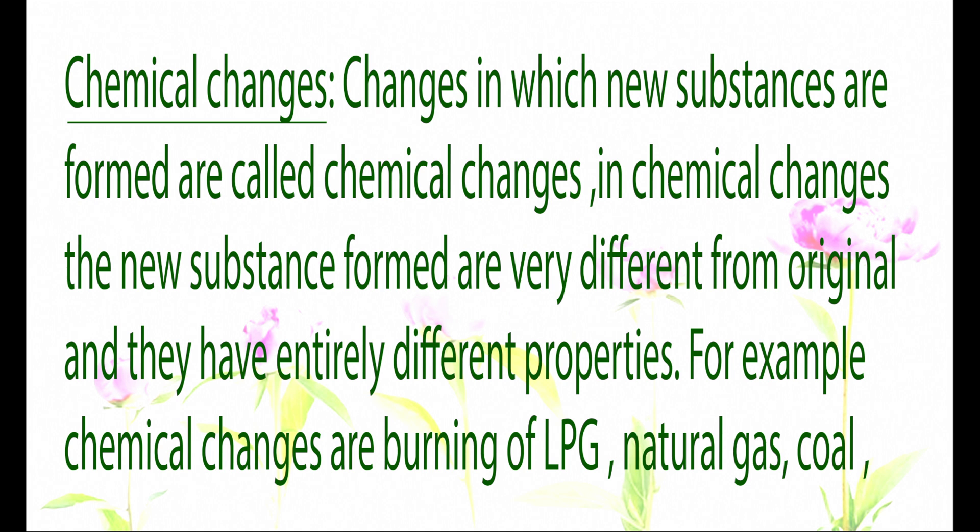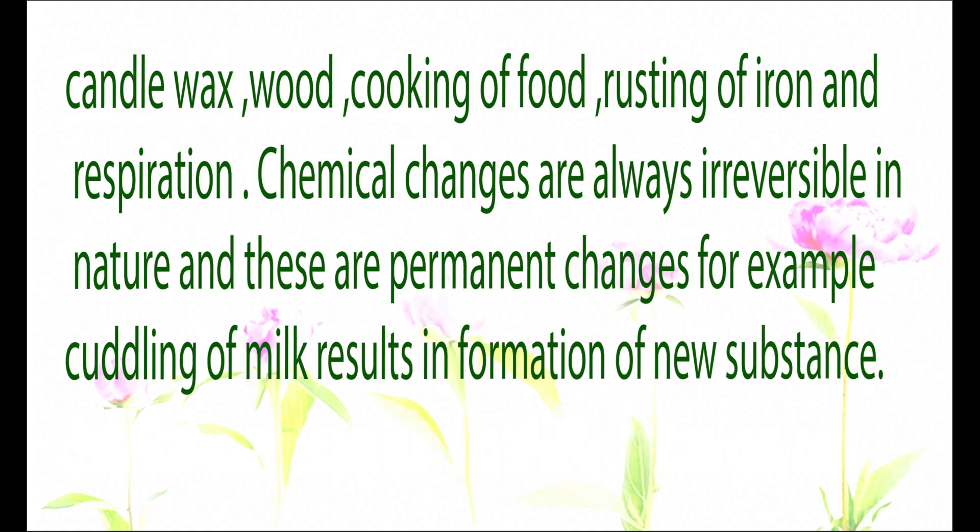Changes in which new substances are formed are called chemical changes. In chemical changes, the new substances formed are very different from the original and have entirely different properties. Examples of chemical changes include burning of LPG, natural gas, coal, candle wax, and wood; cooking of food; rusting of iron; and respiration. Chemical changes are always irreversible in nature and are permanent changes.